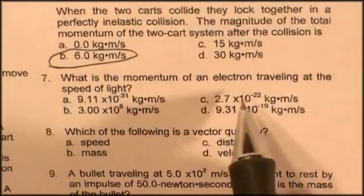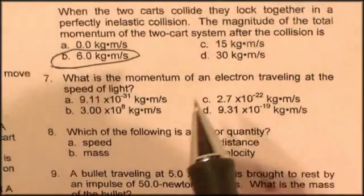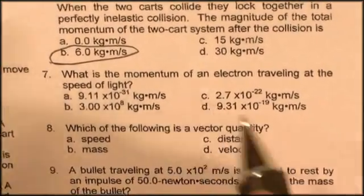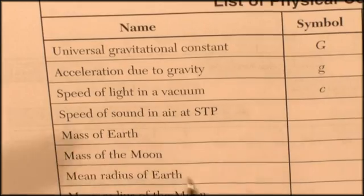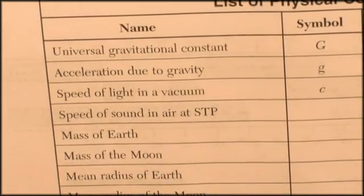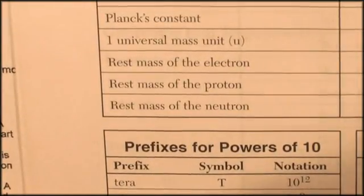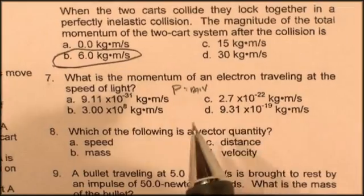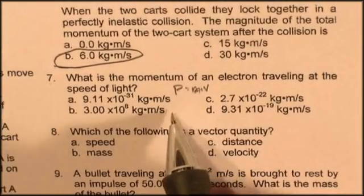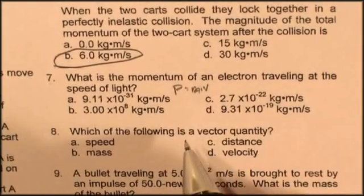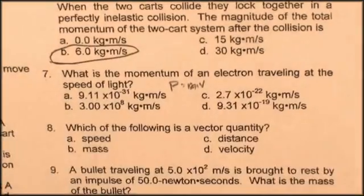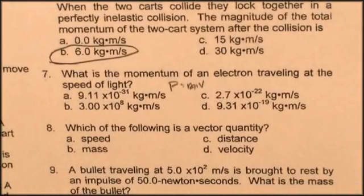Question seven. What is the momentum of an electron traveling at the speed of light? Momentum is mass times velocity. The speed of light can be found on the reference table on the front and the mass of an electron can also be found. So now it's a matter of multiplying the two together. Take the mass of the electron, multiply it by the speed of light. Simple math. You could probably do it in your head.